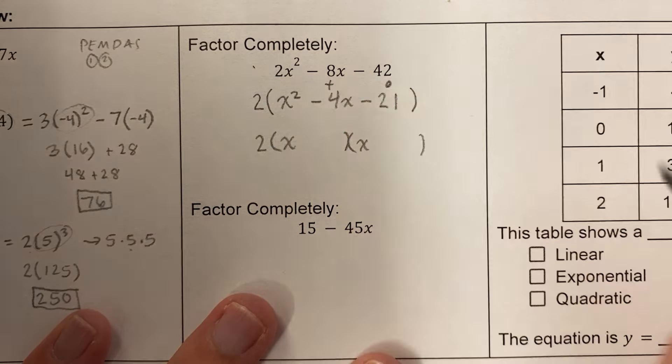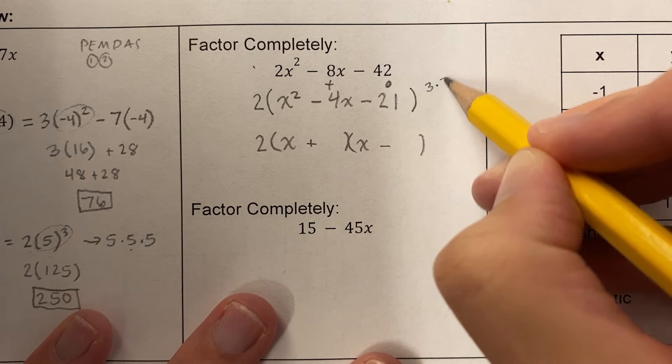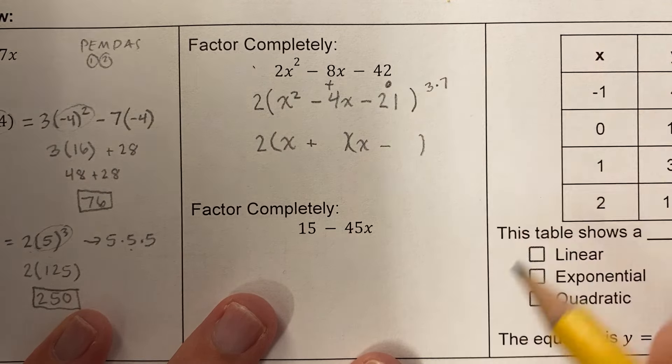So those numbers are going to be positive and negative because it's multiplying to a negative. And the numbers I'm going to use are 3 times 7. 3 times 7 is 21. And if I subtract those numbers, they become 4. So, and then I want it to be negative 4. So I'm going to make the 7 negative and the 3 positive. And this is factored completely. There's no more factoring I can do.